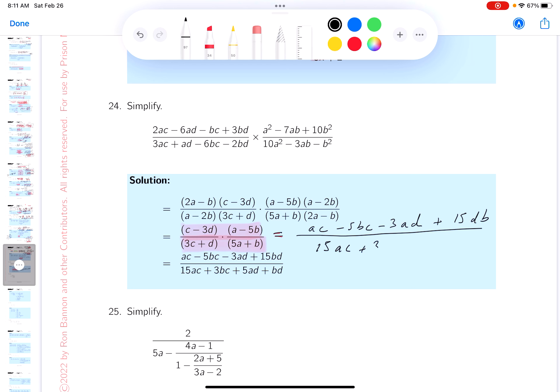15ac plus 3bc plus 5ad plus db or bd. Let's get our little red pen out. See if we got that. ac minus 5bc, minus 3ad, 15bd is the same thing as 15db. Yeah, that's good. 15ac, 3bc, 5ad, bd.